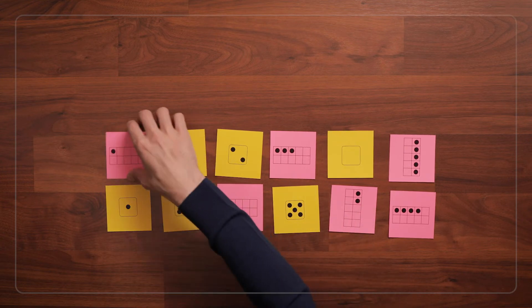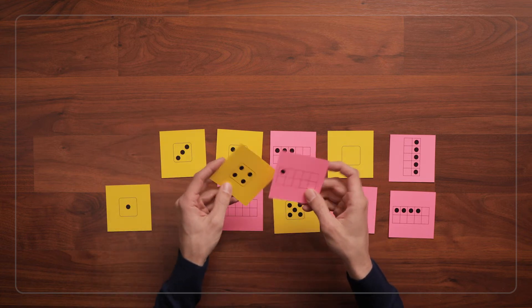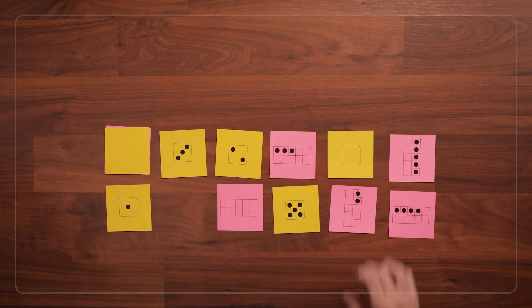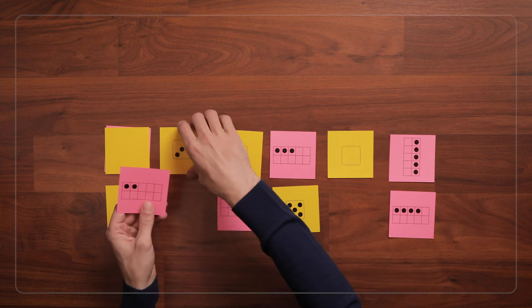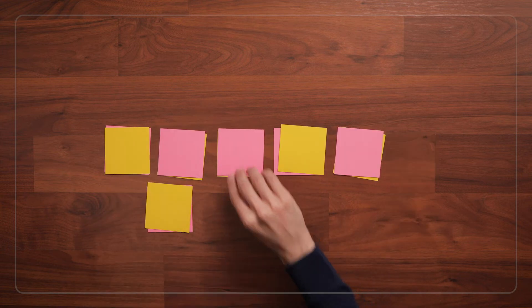If kids are having trouble thinking about how many more, they can show the quantities on their fingers. Continue taking turns putting dot cards together to make 5 until you've made 5 out of all the cards.